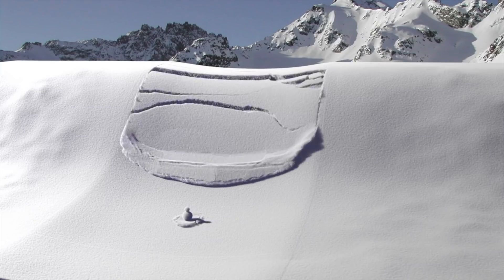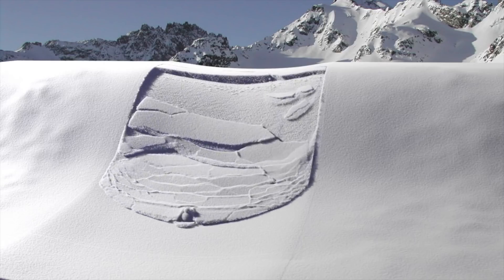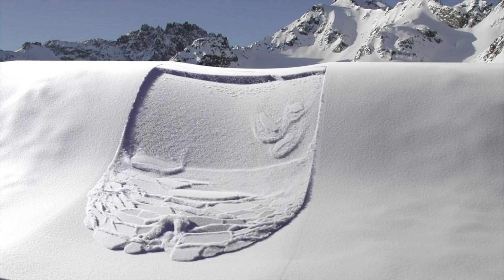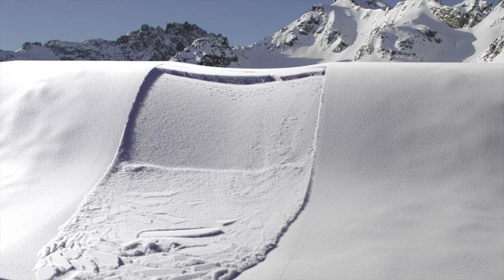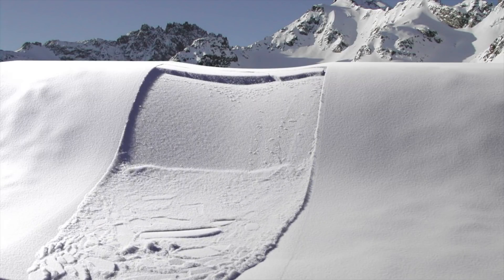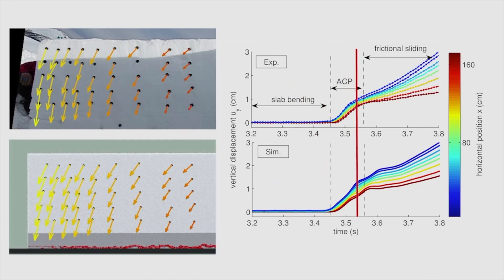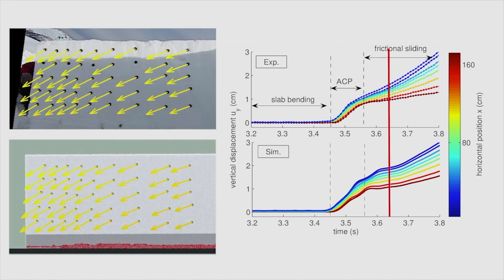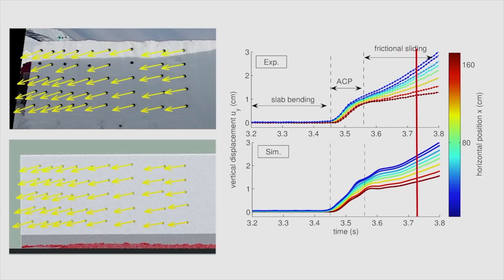It's very difficult to simulate avalanches because snow is a very complex material and its mechanical behavior is not fully understood yet. Another problem is that snow can behave like a solid or like a fluid depending on the loading — for example, snow on the ground and snowpack stability are generally treated using solid mechanics, while the flow of an avalanche is usually characterized using fluid dynamics.